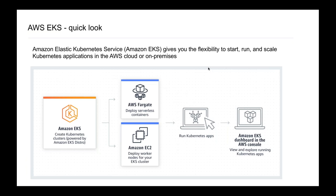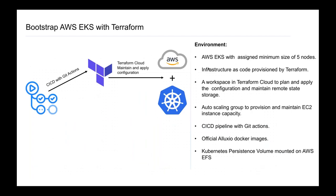A quick look at Alluxio for those who might not be familiar: it's a data orchestration layer that helps unify your data residing in different file stores. Please visit their website — they have spectacular documentation and examples. Elastic Kubernetes Service, AWS EKS, is also a managed service on AWS that makes it easy to spin up and scale Kubernetes clusters on demand.